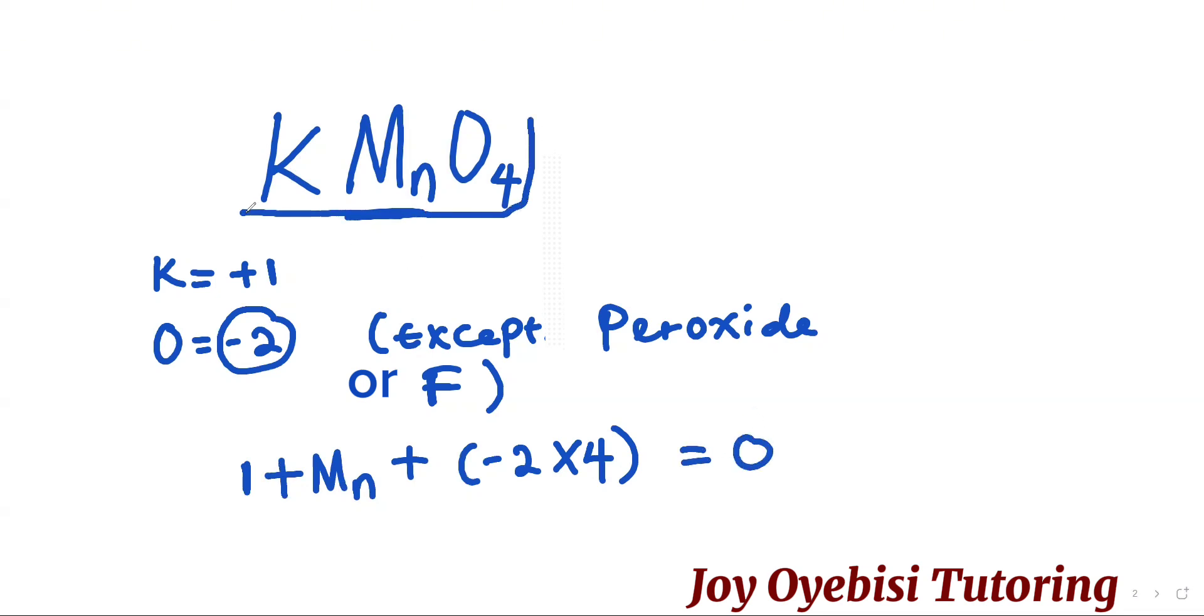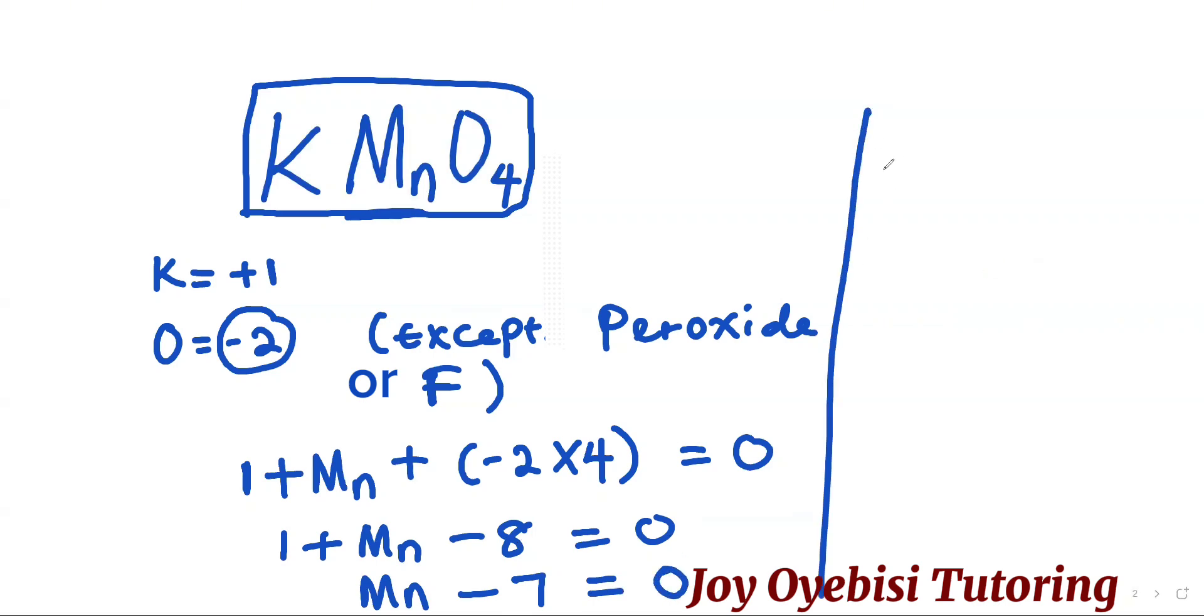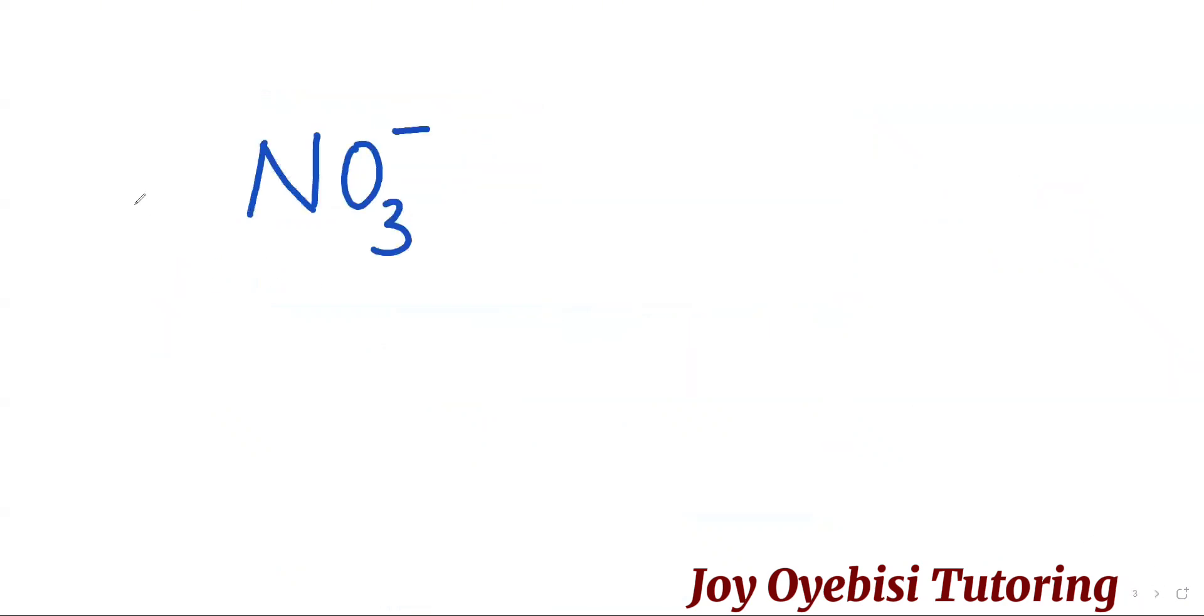So this is a neutral compound. Now, 1 plus Mn plus negative 2 times 4, negative 8, equals 0. So Mn, then 1 minus 8 will be negative 7, equals 0. To find Mn, we're going to take the 7 to the other side, so Mn is equal to positive 7. When negative crosses, it becomes positive. Therefore, the oxidation number of manganese is positive 7.